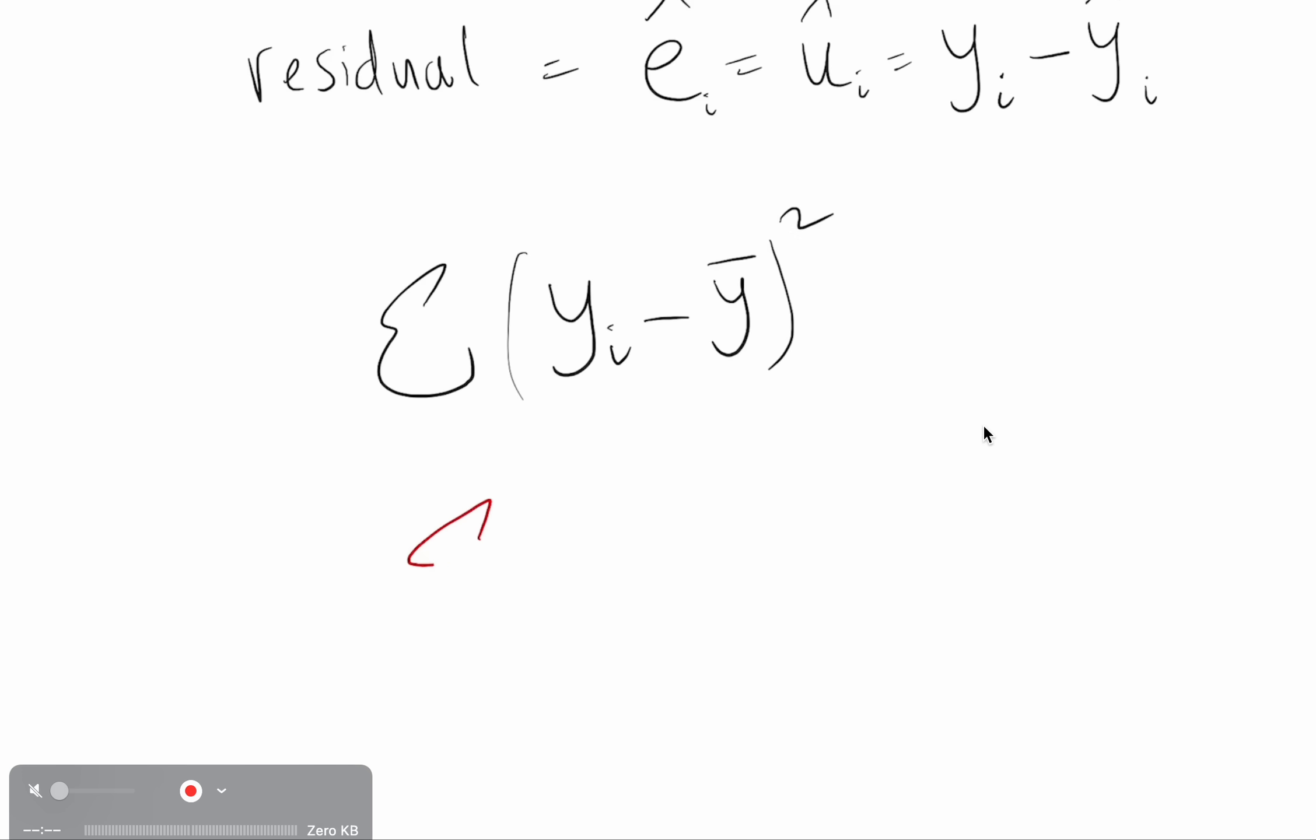But ideally, when you have your actual regression line, you have some actual other information like the hours studied, you won't capture it perfectly, but you will do a little bit better. So the goal is to see how much lower this is than this.